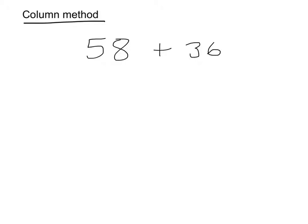When writing down the numbers you write one on top of the other, so 58 with 36, taking care to make sure that the units have all stayed in one column and the tens have all stayed in one column.